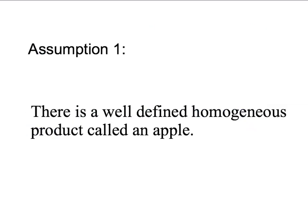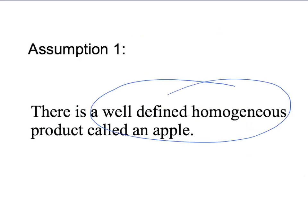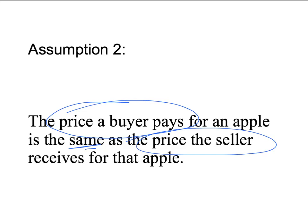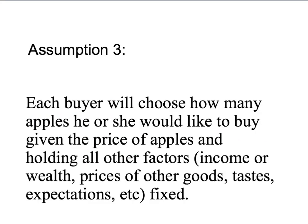Our first assumption is to dismiss the difference between all the different types of apples. What we're interested in is a well-defined, homogeneous product called an apple. Our second assumption: if we're going to talk about the price of apples, we have to answer — what price? The price that buyers pay and the price that sellers receive aren't necessarily the same. So we're going to assume that the price a buyer pays for an apple is the same as the price that the seller receives for that same apple.